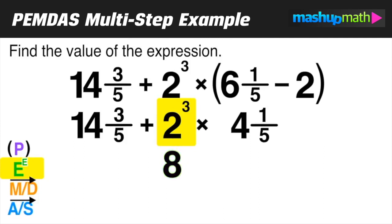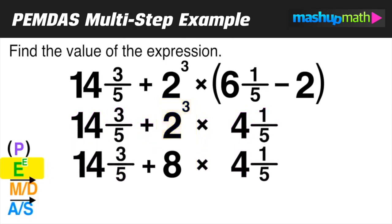Again, everything that was not part of that term with the exponent, we can bring on down. Now we're ready for step three. The next step of the order of operations is performing multiplication or division as we go from left to right.